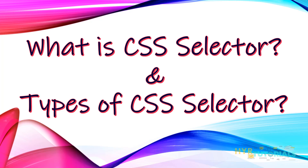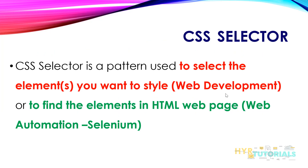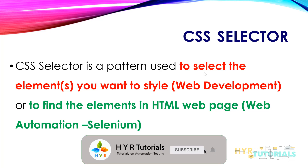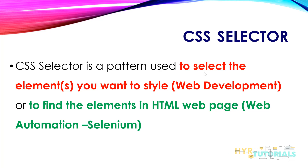Some people feel XPath is difficult while CSS selector is the easiest. People coming from a development background feel CSS selector is the easiest, because they have already worked with CSS for styling documents. So a CSS selector is a pattern used to select the element you want to style, or to find elements in the webpage that you want to perform actions on. From the Selenium point of view, we use the CSS selector to find elements, then perform actions like click, send keys, getting text, and more.